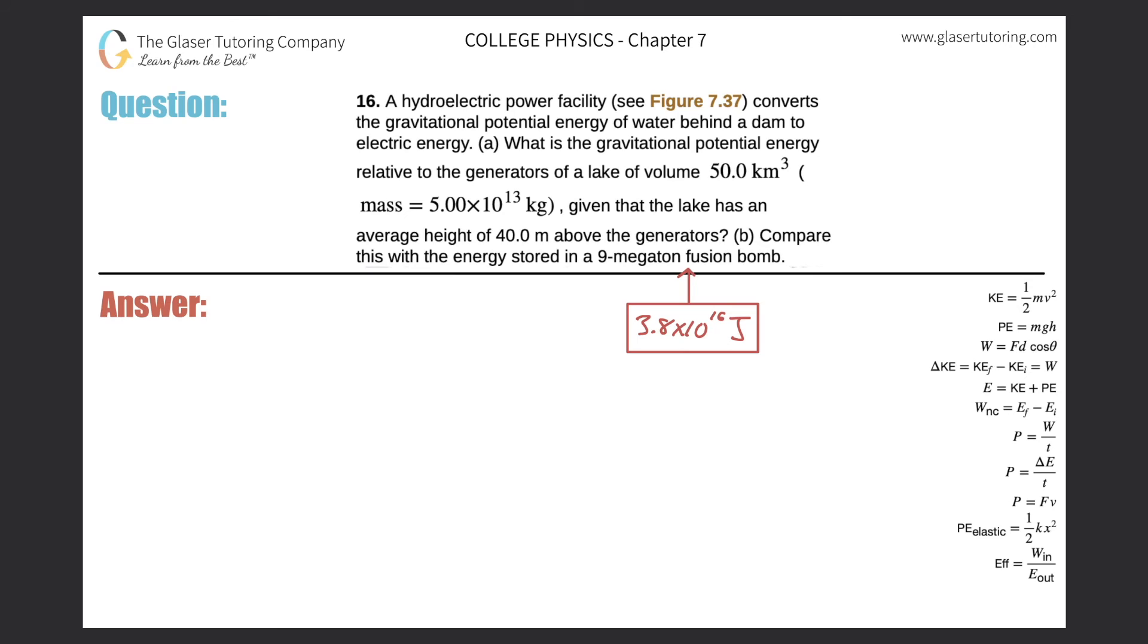Number 16, a hydroelectric power facility converts the gravitational potential energy of water behind a dam to electric energy. Letter A, what is the gravitational potential energy relative to the generators of a lake of volume 50 kilometer cubed, which has a mass of 5 times 10 to 13 kilograms, given that the lake has an average height of 40 meters above the generators?